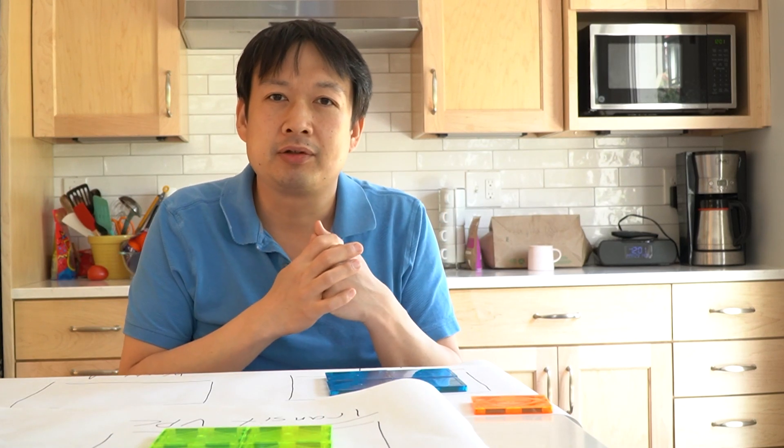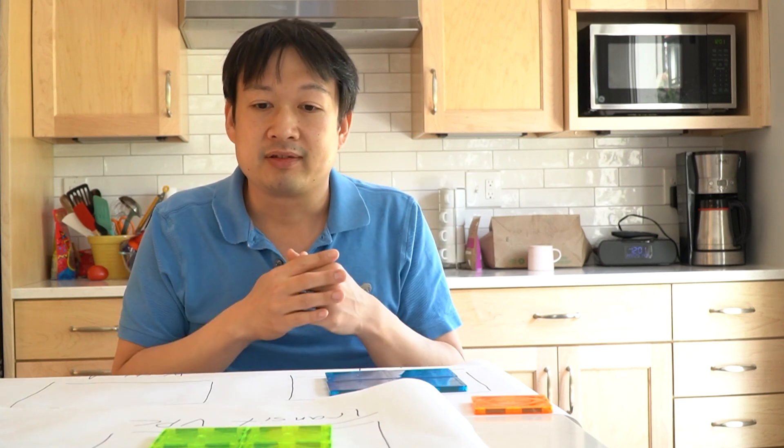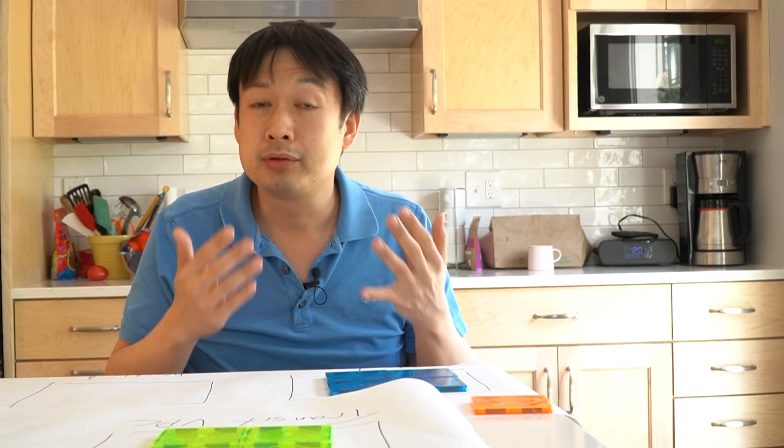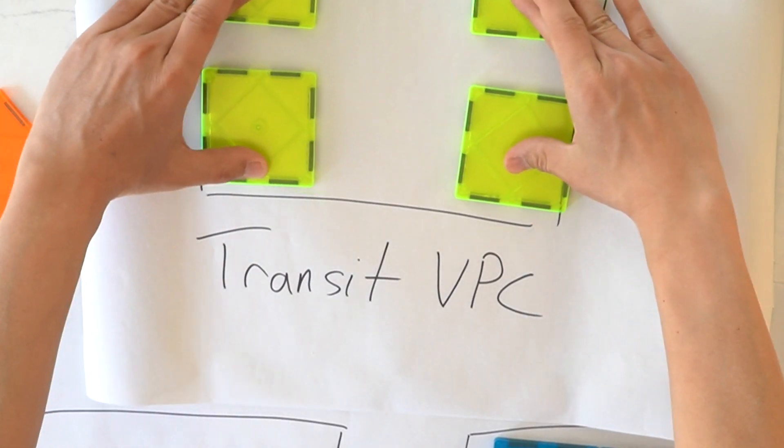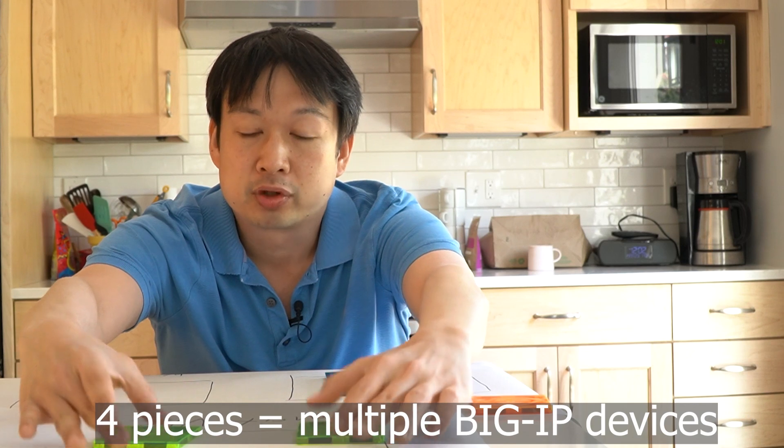But what do you do if you want to work in a HA scenario? Transit Gateway Connect gives us a new way that we can take a single Big IP device and split it apart into four pieces.